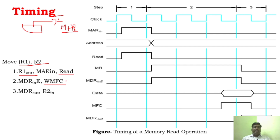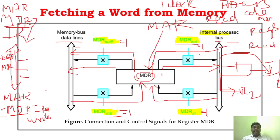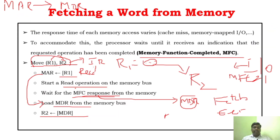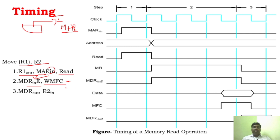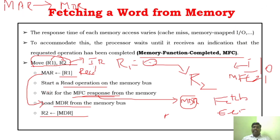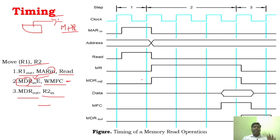Once the MFC signal is completed, the MAR information will be transferred to MDR. Whatever external information has to come, it comes through MDR in. So the information will be coming from MDR in - once after receiving the MFC signal. And once the data reaches the MDR, it has to be sent to R2. You can see MDR out - through the internal bus it will reach R2. This is the simple execution for fetching data from memory.